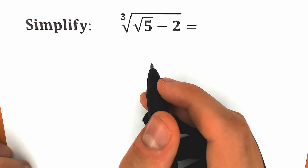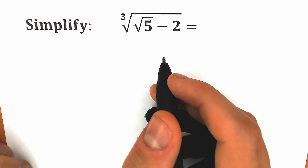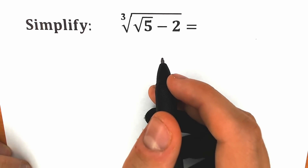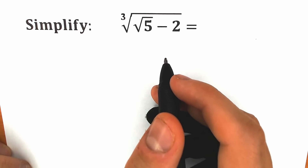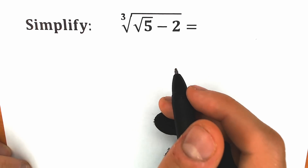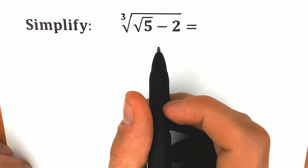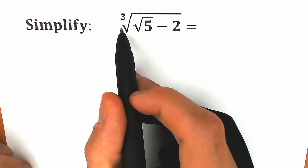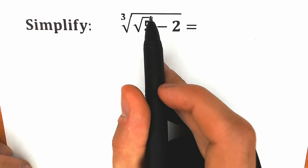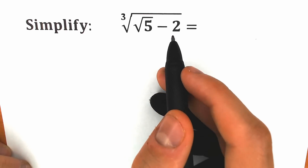Hello everyone! Happy to see you here. Welcome back to my channel. I am a semantics. Today we have a very interesting and very tricky question from an entrance examination — and if you have your solution, you can also write it down in the comment section. We need to simplify this expression: the cube root of the square root of 5 minus 2.